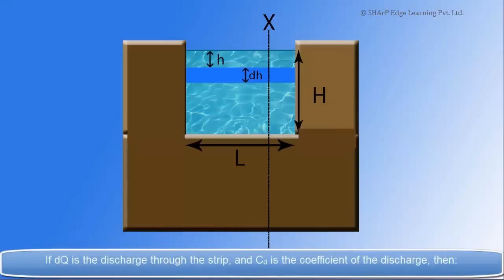If dQ is the discharge through the strip and cD is the coefficient of the discharge, then dQ equals cD into L into dH into under root 2GH.